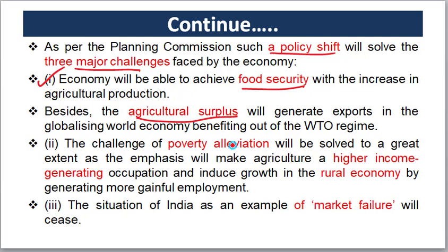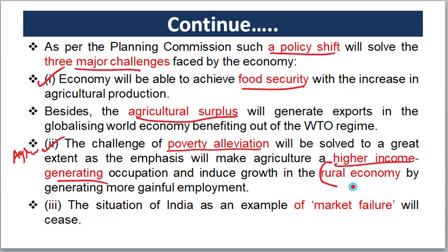This is the first reason — food security — related to the Planning Commission's policy shift. The second reason is poverty alleviation. A large share of India's population was dependent on agriculture for their livelihood. If we emphasize agriculture in the market and generate higher income from it, we can address poverty effectively.